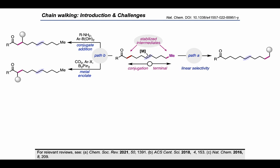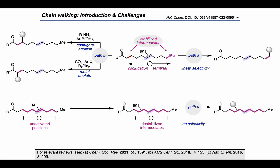Alternatively, functionalization can occur alpha to a pi system, which can benefit from eta-3 stabilization or formation of a metal enolate. Additionally, thermodynamic isomerization of the alkene to the conjugated position can then allow for classical conjugate addition reactions. While these positions outlined in Pathway A and B have been well established, I was curious whether we could develop a methodology that could target the unactivated positions in the middle of the alkyl chain. Unfortunately, these metal alkyl intermediates are destabilized and suffer from rapid beta-hydride elimination. Consequently, it's very difficult to achieve selective functionalization at these positions, and typically a mixture of regioisomers is observed.